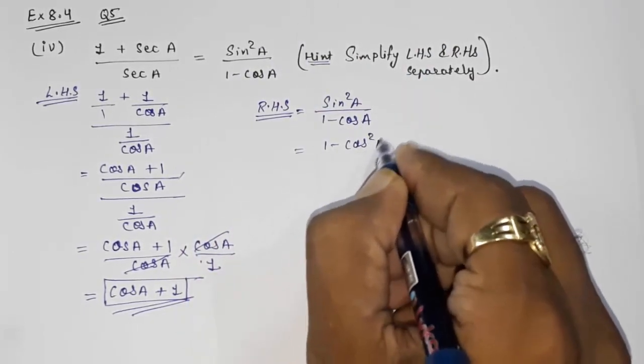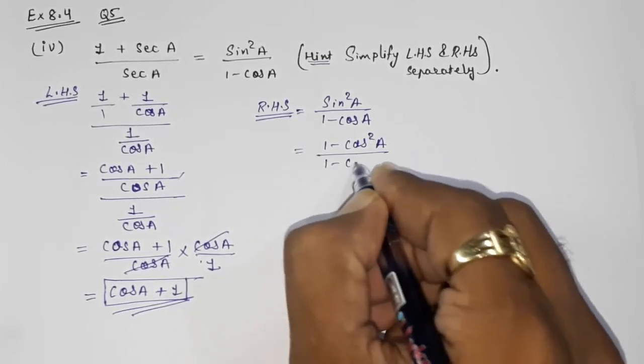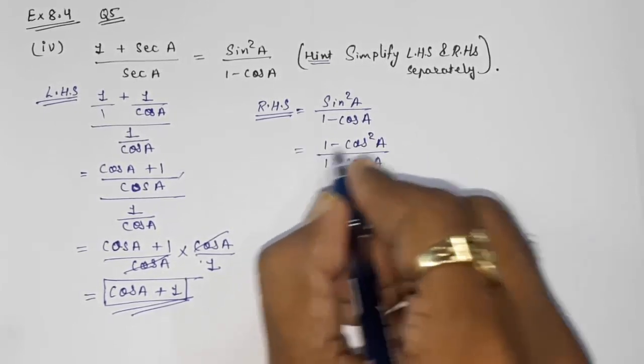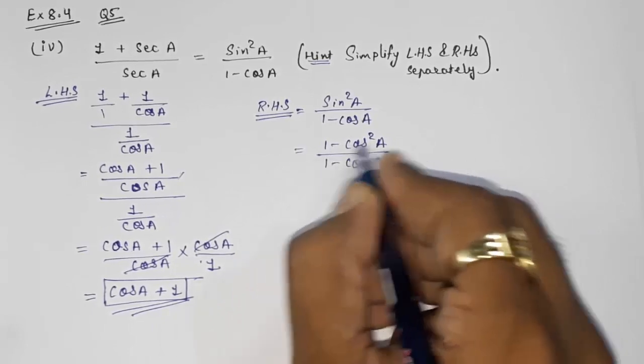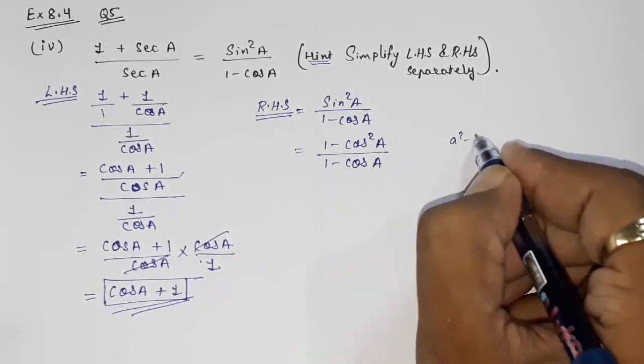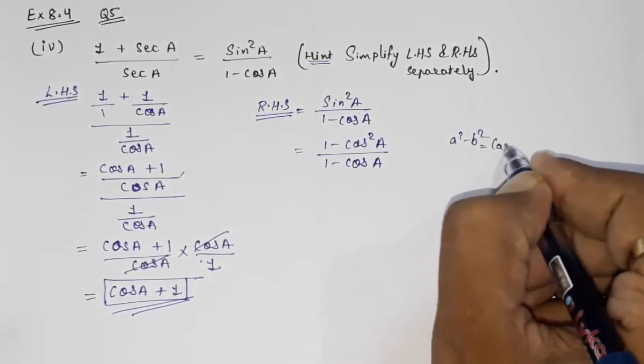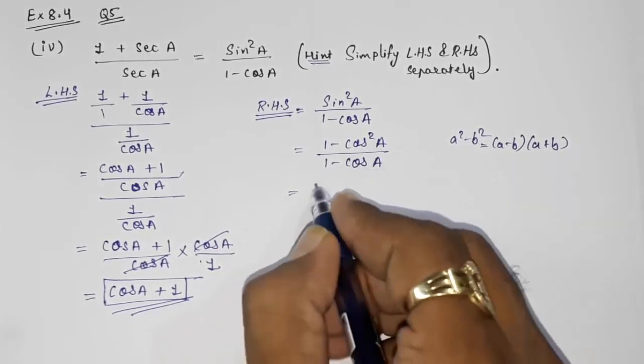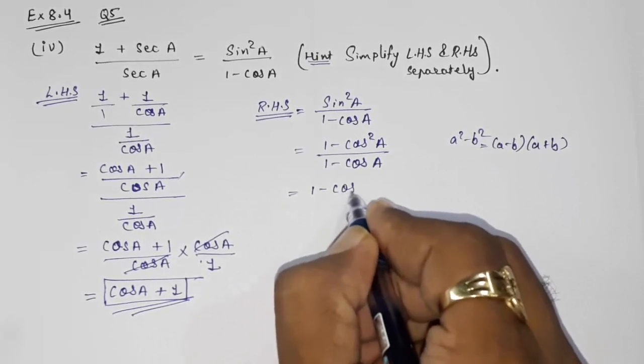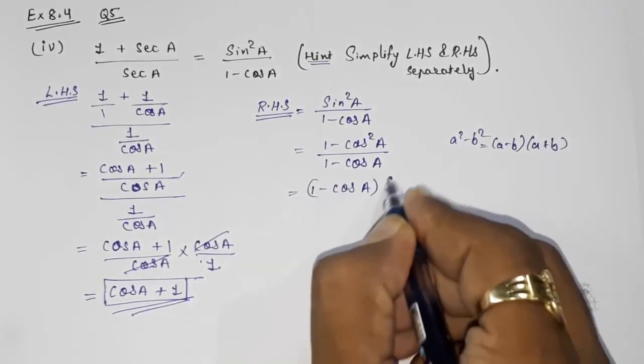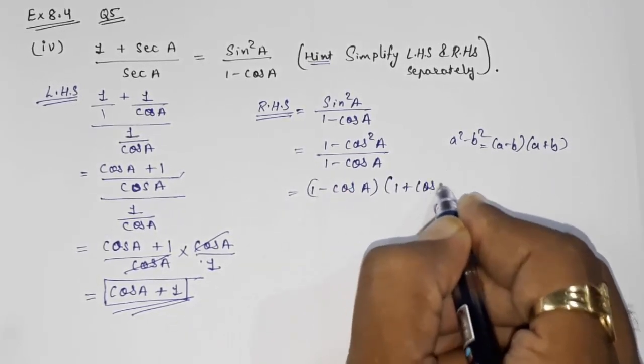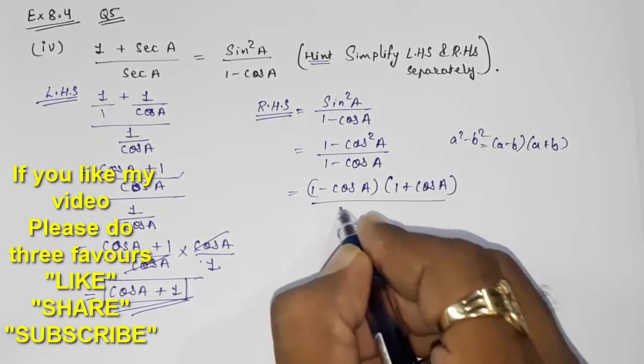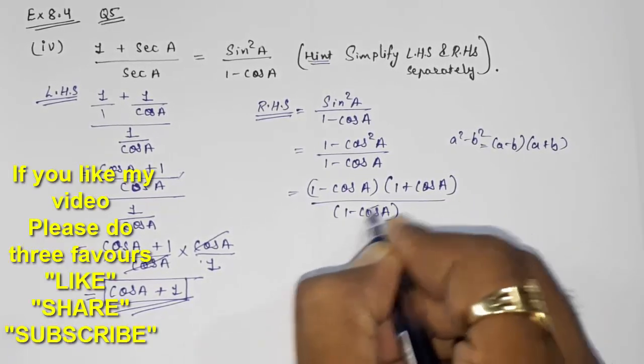1 minus cos square A upon 1 minus cos A. So here we will get 1 minus cos A into 1 plus cos A upon 1 minus cos A.